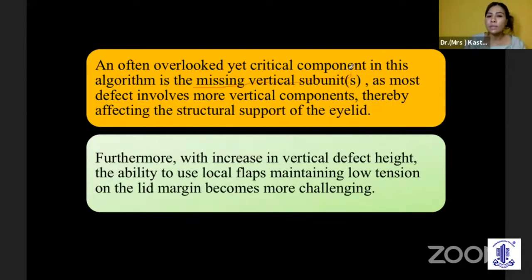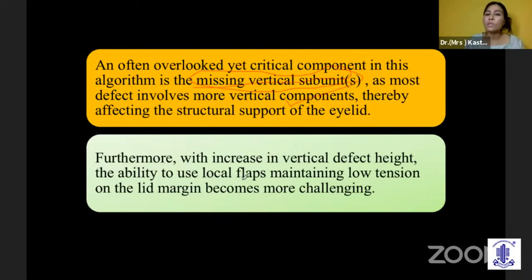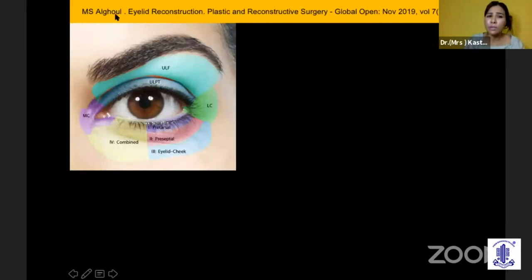But the most important point that has been overlooked here is that there are missing verticals. When we do a lid reconstruction, we also need to reconstruct the vertical components. With increasing vertical height, the ability to use local flaps without much tension becomes more challenging. This led to a very interesting paper where they have divided the algorithm for lid reconstruction to include consideration of the vertical height.